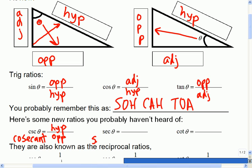The secant is the hypotenuse over the adjacent. And then the last one is the cotangent, which is the adjacent over the opposite.